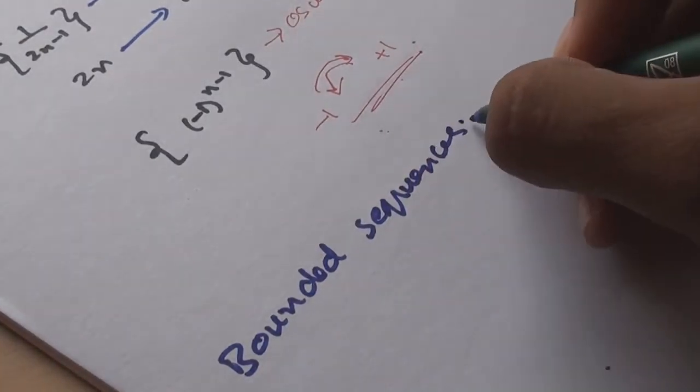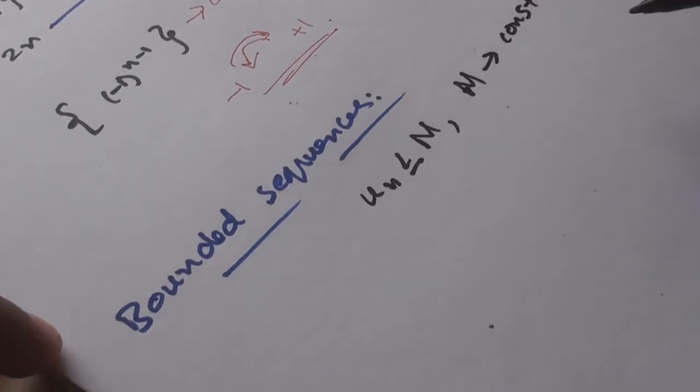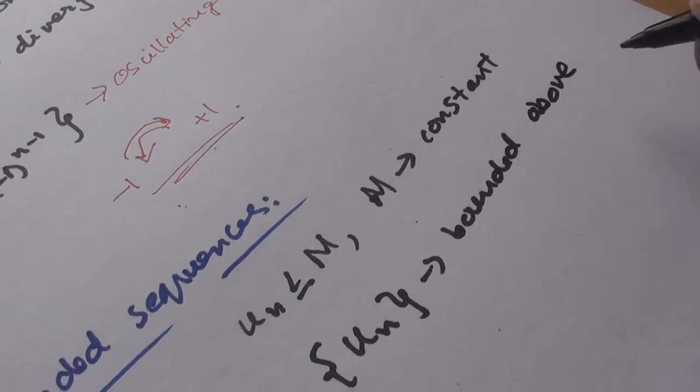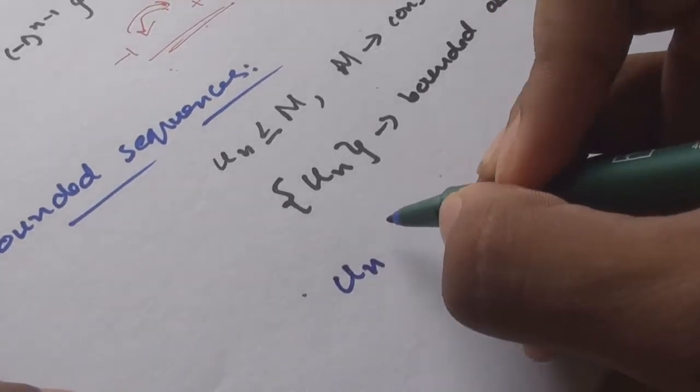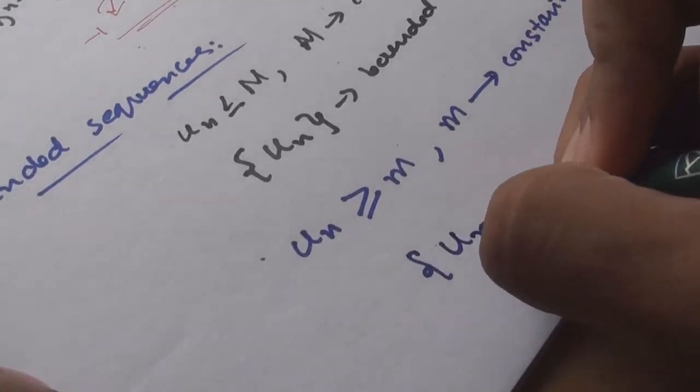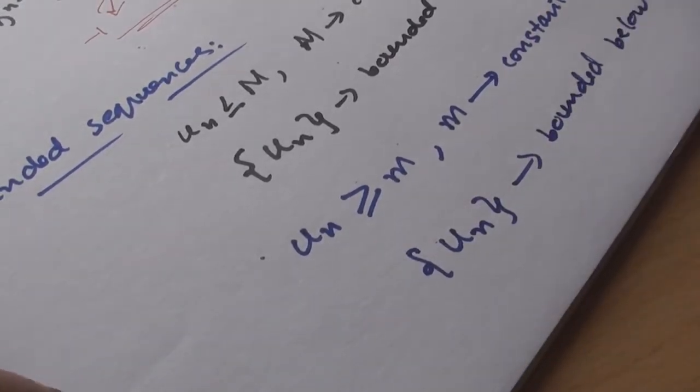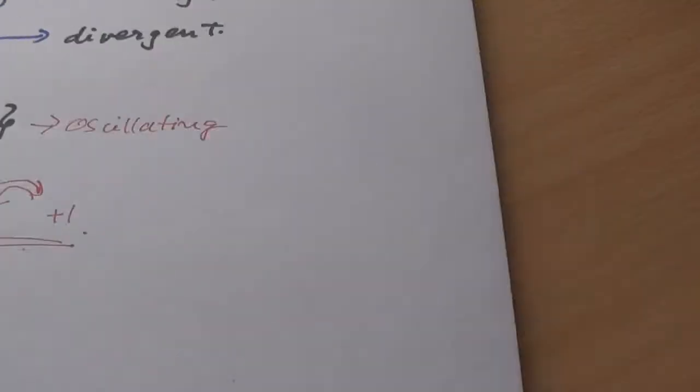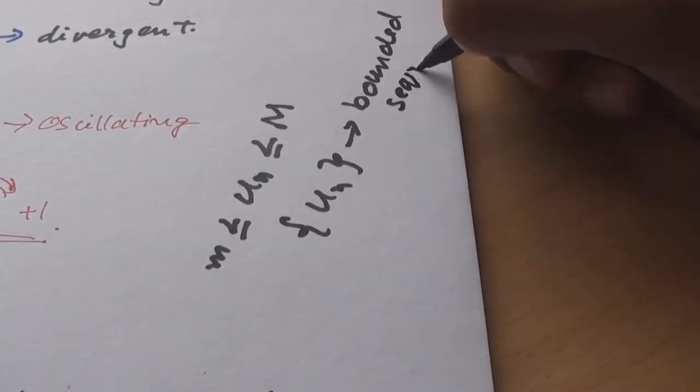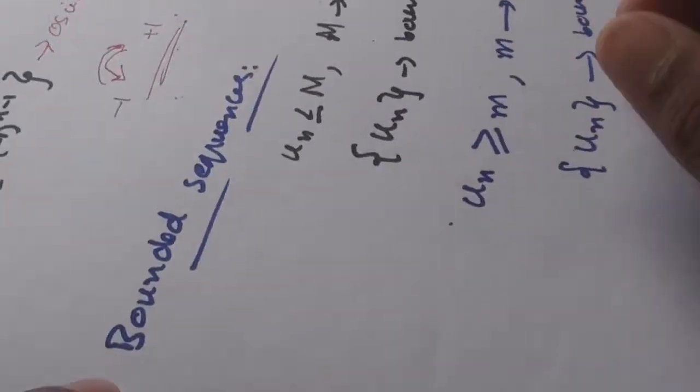Bounded sequences: If un ≤ M where M is a constant, we say un is bounded above and M is the upper bound of un. And if un ≥ m where m is a constant, then un is bounded below and m is the lower bound of un. And if m ≤ un ≤ M, then the sequence is called a bounded sequence. Every convergent sequence is bounded. However, the converse is not true.